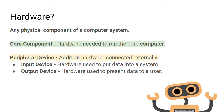Hardware is basically any physical component on a computer. It's split up into two categories: core components and peripheral devices. Core components are essential bits of hardware that you need to run the computer. Peripheral devices are additional bits of hardware which are connected externally, and they can be referred to as input devices or output devices.